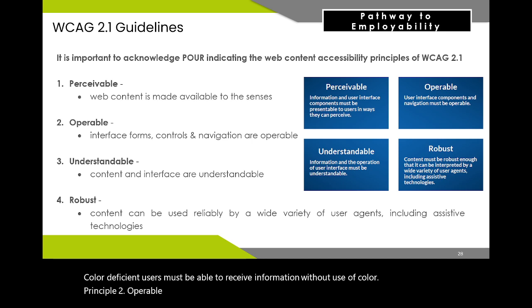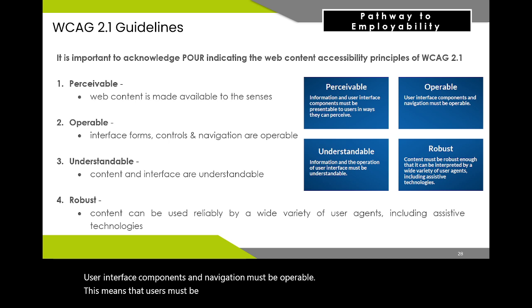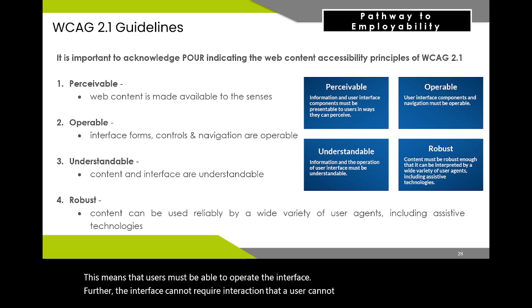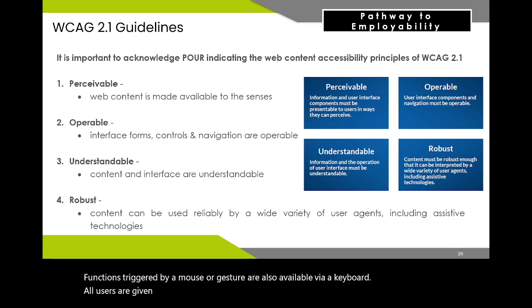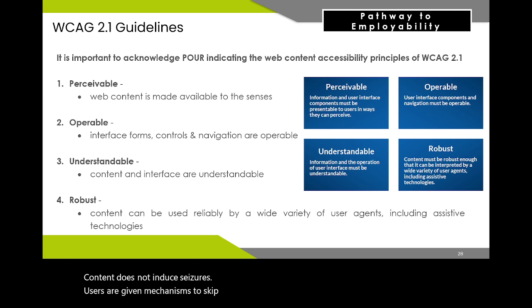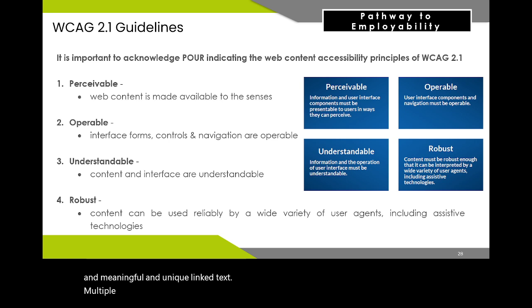Principle 2: Operable — interface forms, controls, and navigation are operable. User interface components and navigation must be operable, meaning users must be able to operate the interface, and the interface cannot require interaction that a user cannot perform. Examples include: functions triggered via mouse or gesture are also available via keyboard; all users are given sufficient time to read and use content; content does not induce seizures; users are given mechanisms to skip repetitive content; and landmarks are provided to assist in screen reader navigation, such as meaningful page title, semantic headings, ARIA landmarks, and meaningful link text. Multiple paths are provided to navigate website structure.